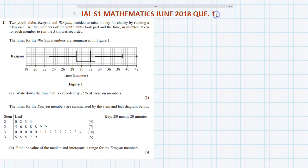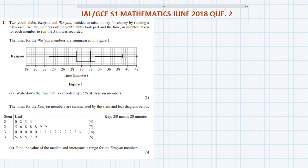This is question number two, IAL S1, that can also be used for GCE revision. Two youth clubs, STU and WestU, decided to raise money for charity by running a five kilometer race. All the members of the youth clubs took part and the time in minutes taken by each member to run the five kilometers was recorded. The times for WestU members are summarized in this figure.